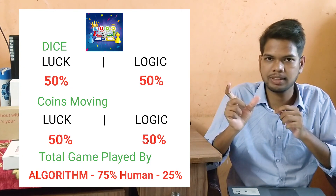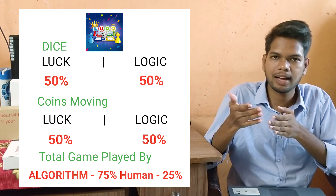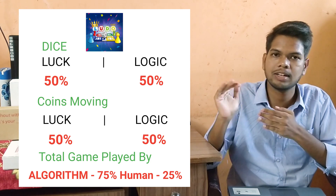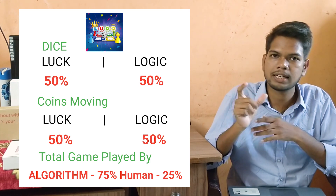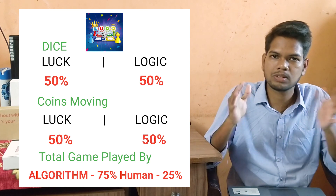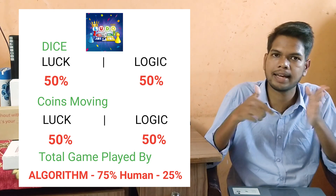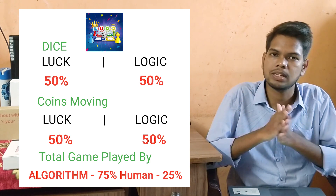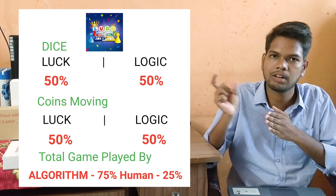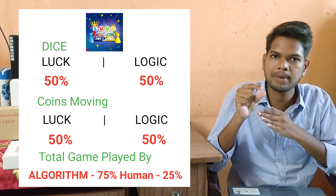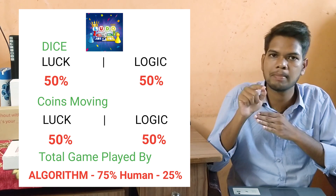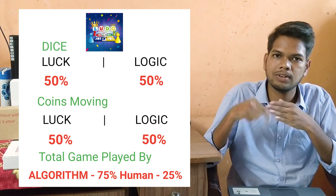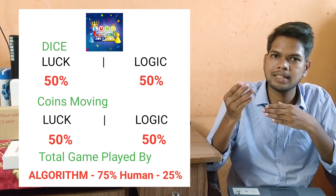If you consider this Ludo game, it is 50% luck and 50% logic. If you look at the twist here — 50% luck is luck, and 50% logic is logic. But if you look at the dice in the game, it will display the game. If you look at the dice, you will check the decision of the dice. With your luck, you will check the dice. You just control the dice and have a 50% algorithm.